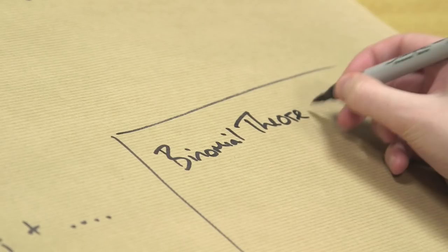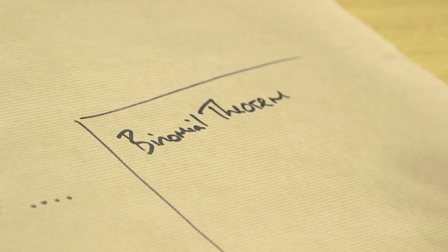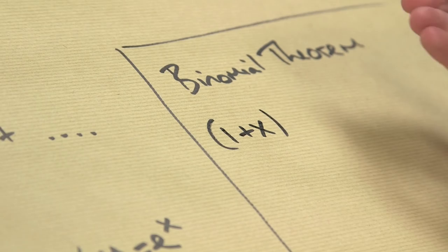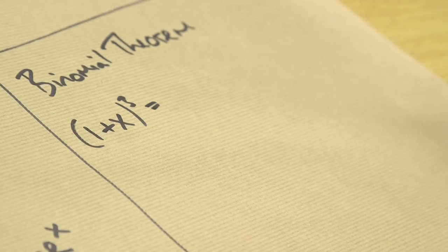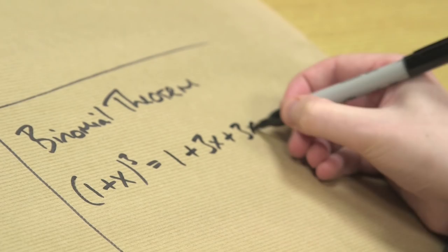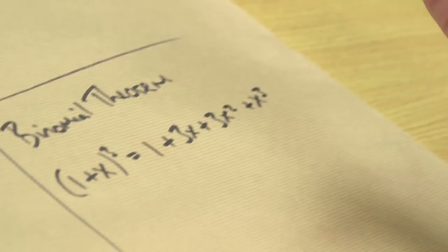It uses the binomial theorem. Binomial theorem is something they teach in schools, if you can remember it. I'll give you an example. If you had something like 1 plus x, and I wanted to cube it, so 1 plus x times 1 plus x times 1 plus x, you would have to expand the brackets, which is a bit awkward. But I can write down the answer straight away. I know it's 1 plus 3x plus 3x squared plus x cubed, because I'm using binomial theorem.